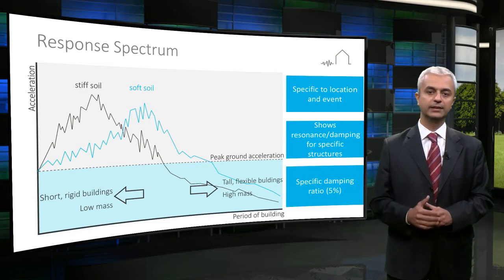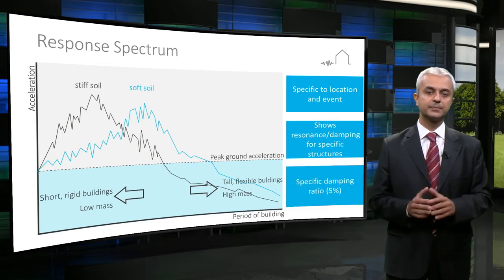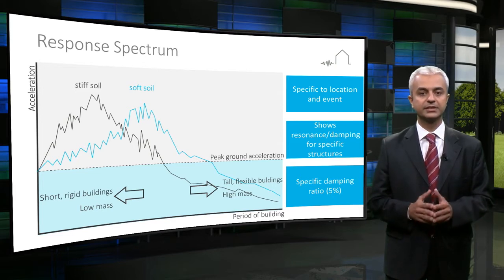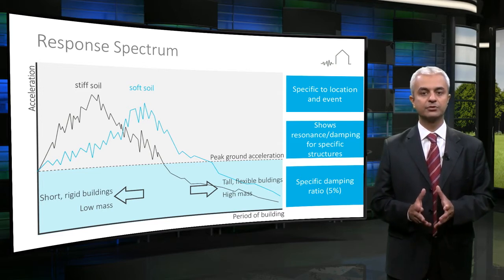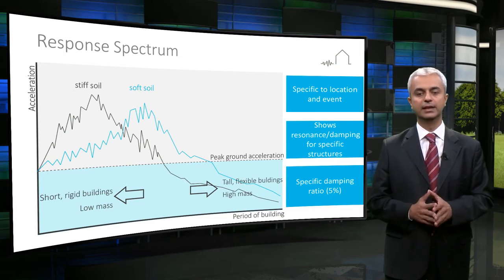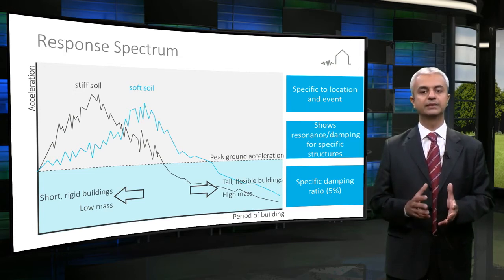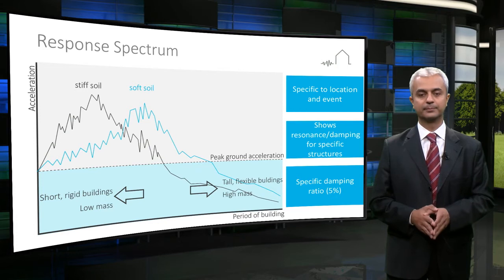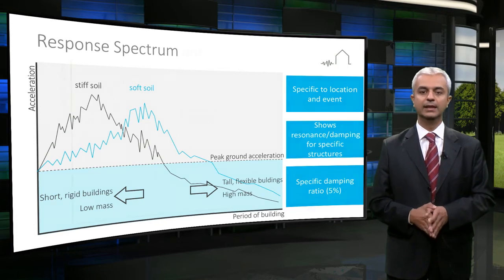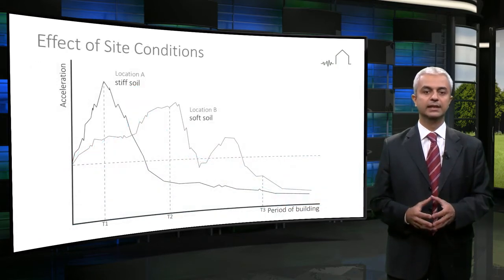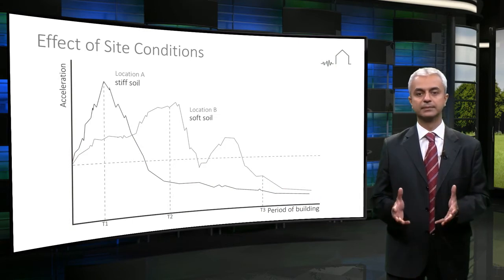And finally, each spectrum is derived for a specific critical damping ratio. Since the critical damping ratio for most structures is around 5%, it is mostly derived for 5% of critical damping ratio. Depending on the earthquake and site effects, the response of structures will vary.